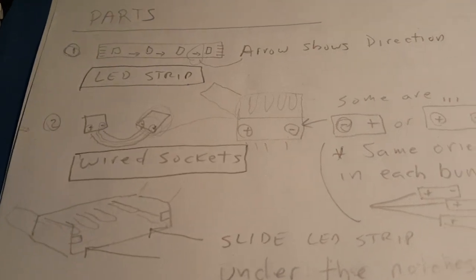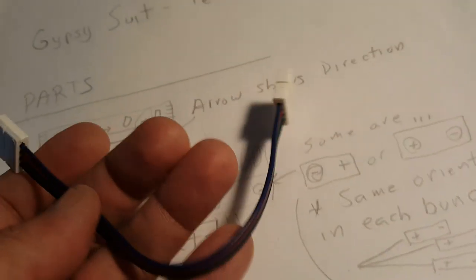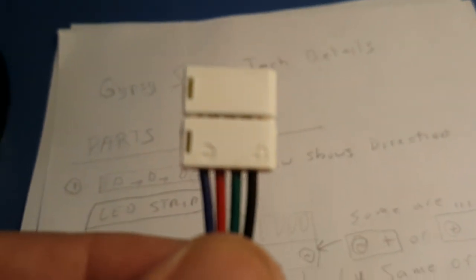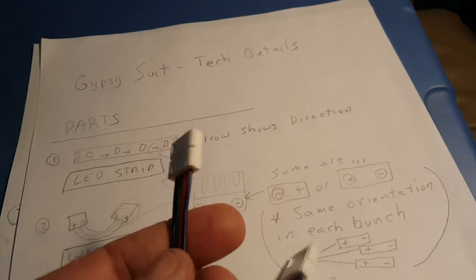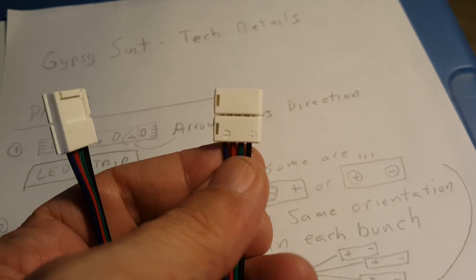There's also the wired sockets. The important thing about the wired sockets is they have a little plus and minus on them. Because they're through connectors, one side is plus-minus and the other one's minus-plus. So we put them in bunches, connecting only ones that have plus on the left together and ones that have minus on the left together.